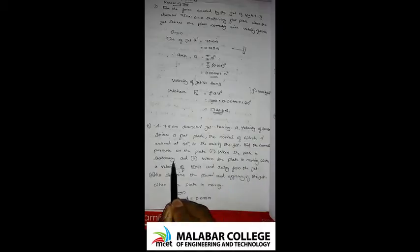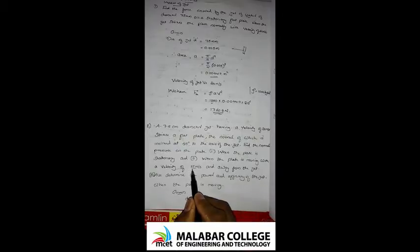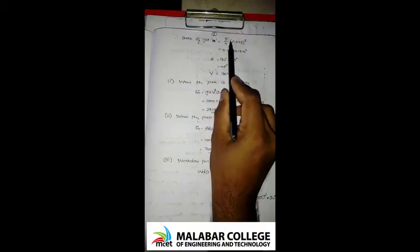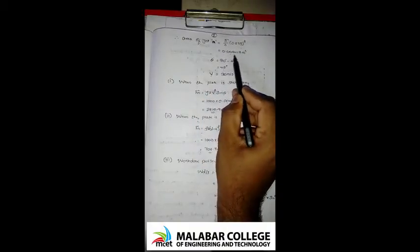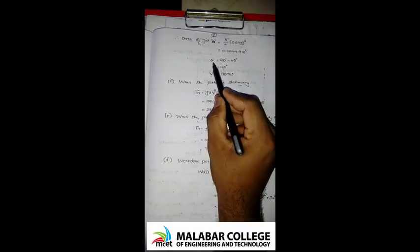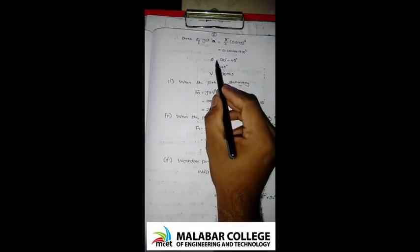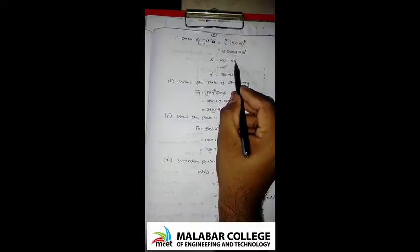The normal force is Fn. There are two cases. In one case the plate is stationary; in the other the plate is moving. The plate velocity u is 15 meters per second. The diameter is 7.5 cm, so the area is (π/4)·d². The angle of deflection is 45 degrees, so theta is 90 − 45 = 45 degrees. V is 30 meters per second.